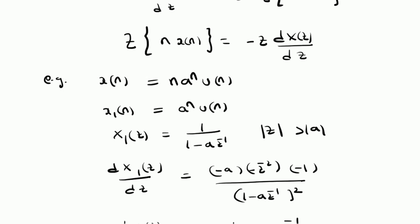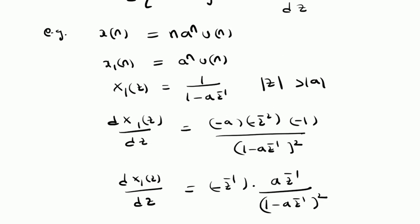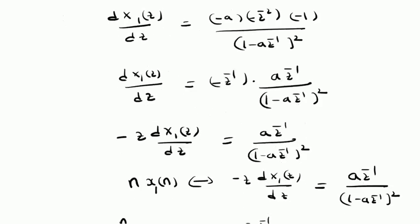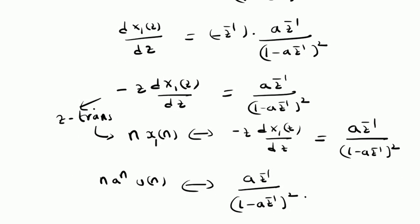We also looked at an example where we derived the Z transform of the sequence n times a power n times u of n. We used the Z transform of X1 of n equals a power n times u of n, which is 1 by 1 minus a Z inverse with ROC mod Z greater than mod a. By applying the derivative and using the differentiation property, minus Z times the derivative of X1 of Z equals a Z inverse divided by 1 minus a Z inverse whole square, which is the Z transform of n times a power n times u of n. Note that the ROC remains the same, that is mod Z greater than mod a.